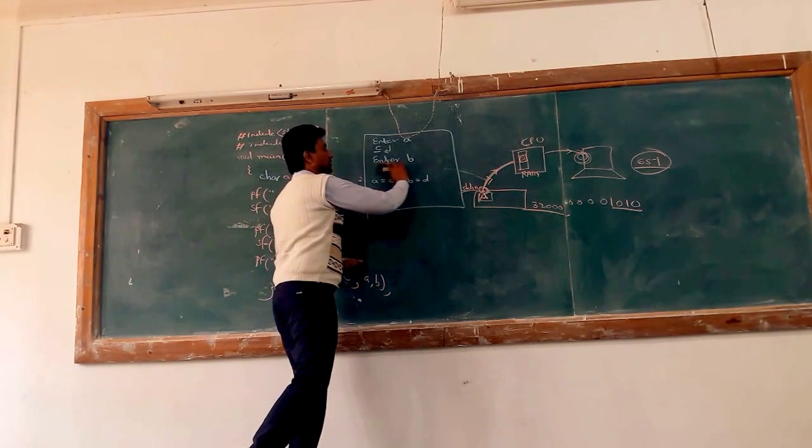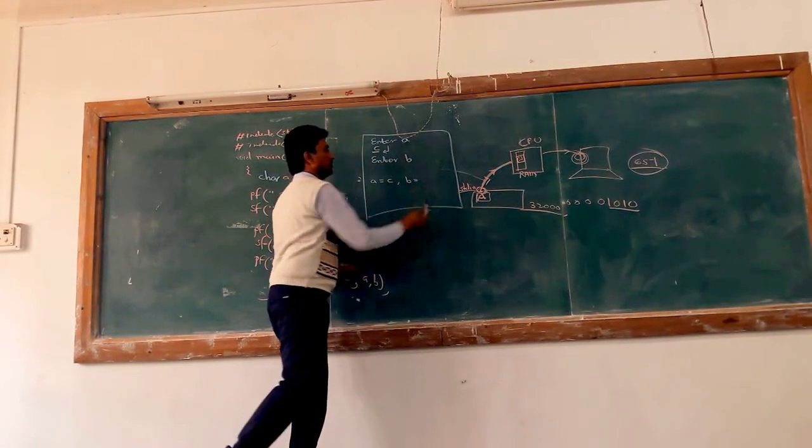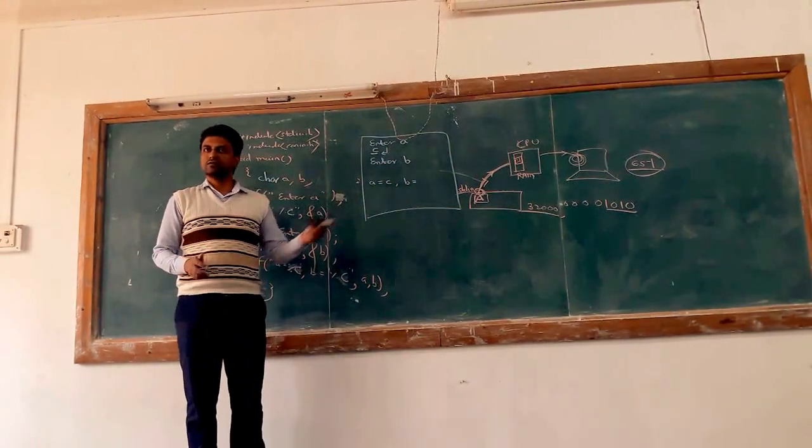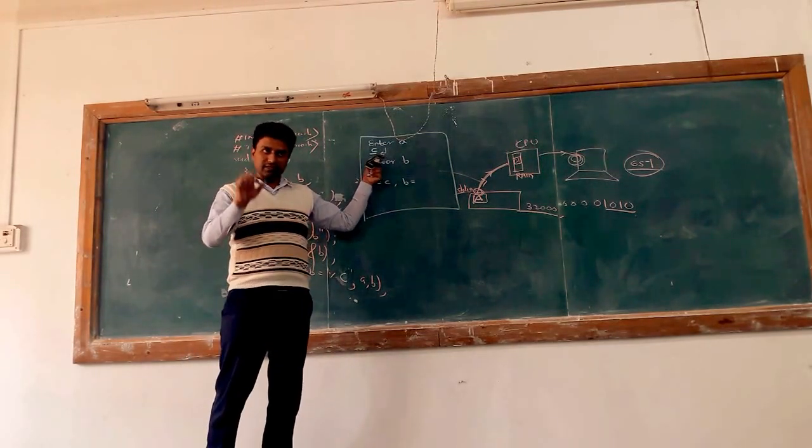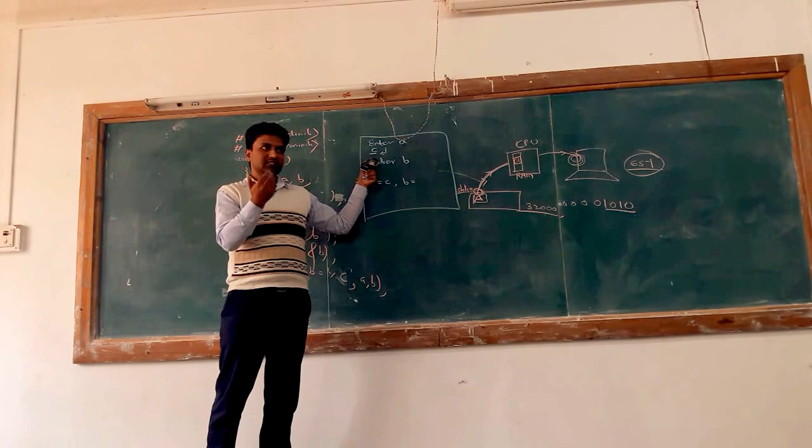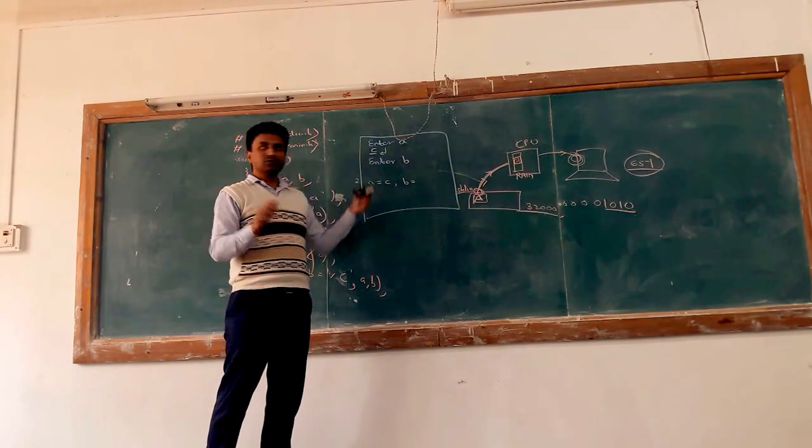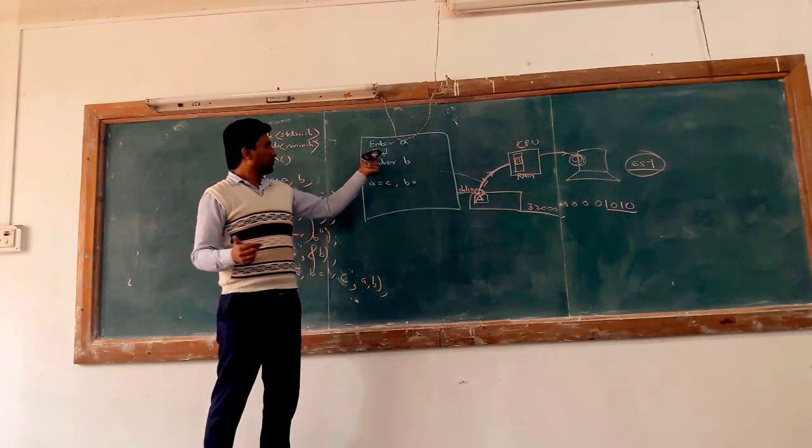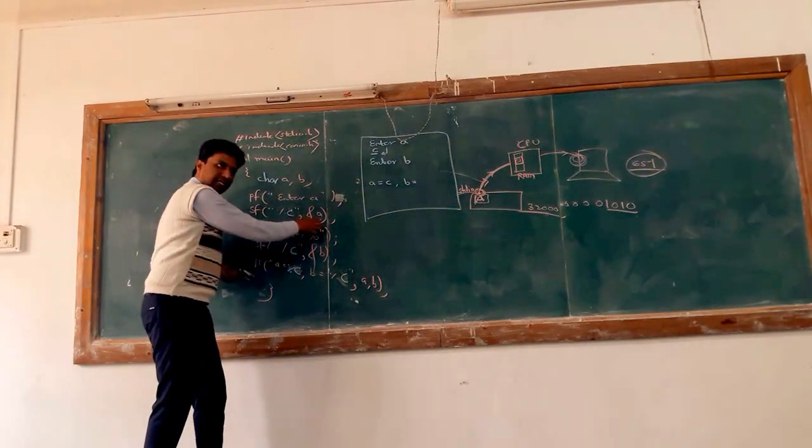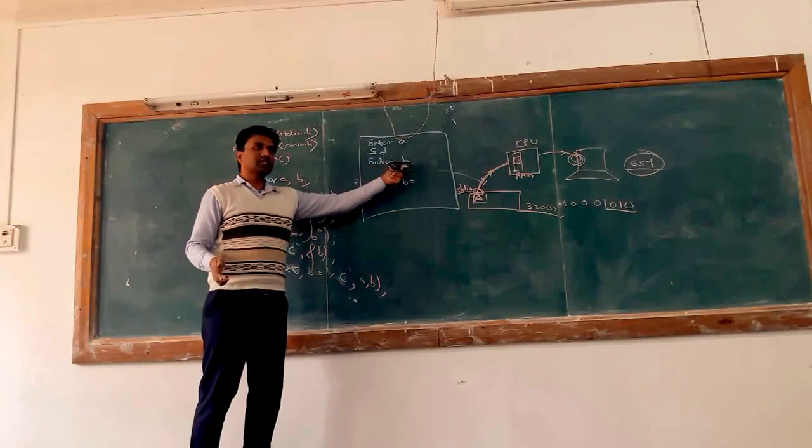Output of this program is like that. What is the output? Enter A, C. You can enter C. Cursor blinks for scanning one single character. Then you can press C and press enter key. Then C gets moved to where address of A. Next, what happens? Enter B.